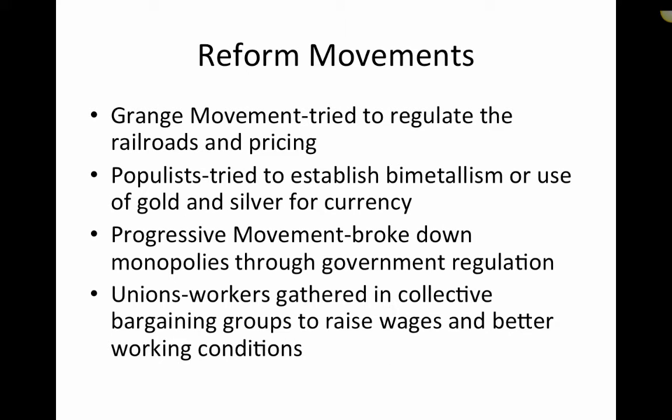This led to a number of major reform movements in America. One of the biggest was the Grange movement, which tried to regulate railroads and pricing at a local level, but eventually failed due to Supreme Court decisions. That eventually led into the Populists trying to establish bimetallism — the use of gold and silver for currency — so that the more gold and silver put into the economy, the more consumer spending.